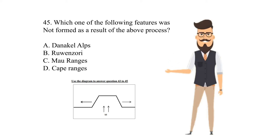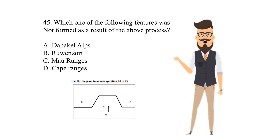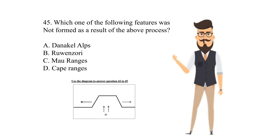Question 45. Which one of the following features was not formed as a result of the above process? A. Danakil Alps. B. Rwenzori. C. Mau Ranges. D. Cape Ranges.